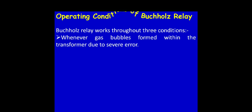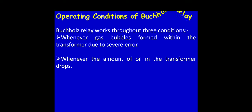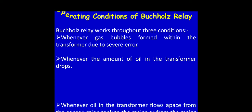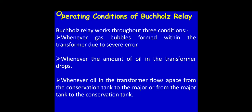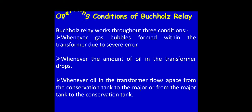The operating conditions of the Buchholz relay: the relay works under three conditions. First, whenever gas bubbles form within the transformer due to a severe error. Second, whenever the amount of oil in the transformer drops. Third, whenever oil in the transformer flows rapidly from the conservator tank to the main tank or from the main tank to the conservator tank.